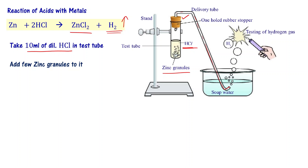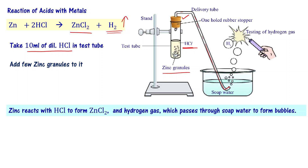The hydrogen gas enters the soap water and passes through it to form bubbles. When zinc reacts with hydrochloric acid, it forms ZnCl₂ — zinc chloride salt — dissolved in the dilute hydrochloric acid, and hydrogen gas, which passes through the soap water to form bubbles.